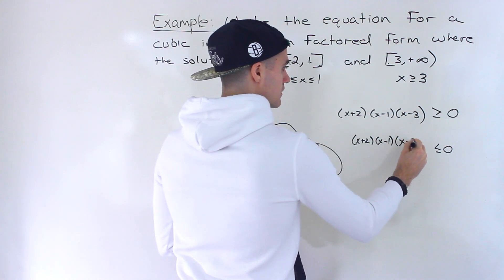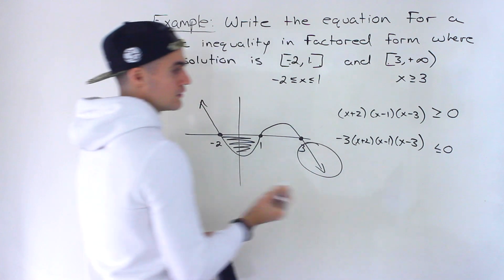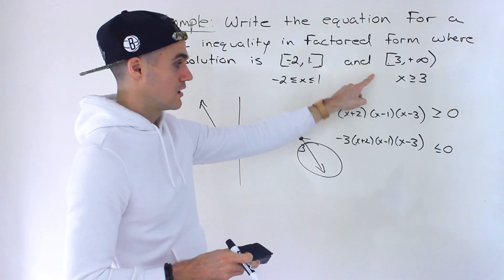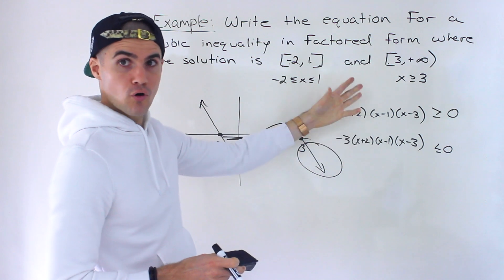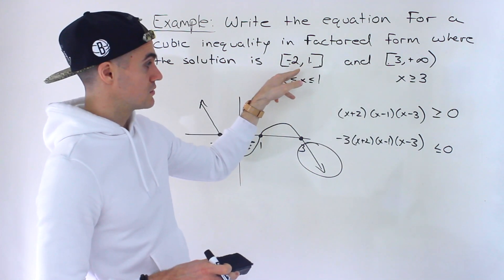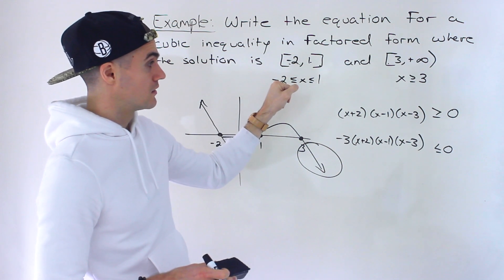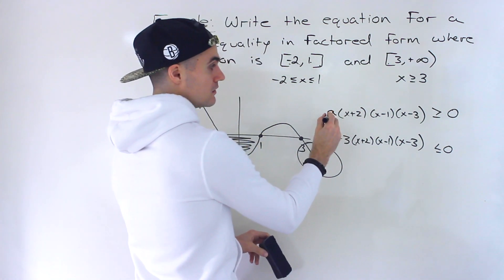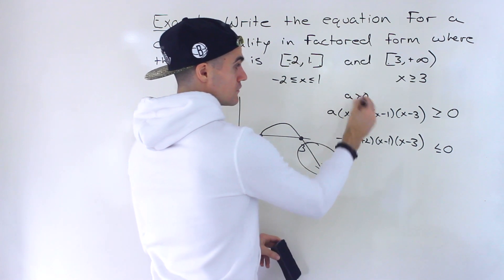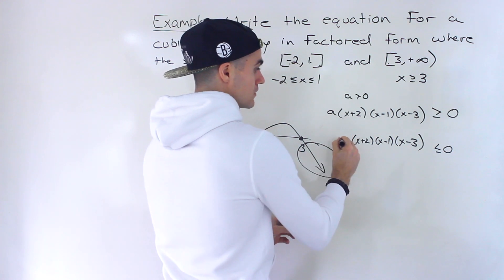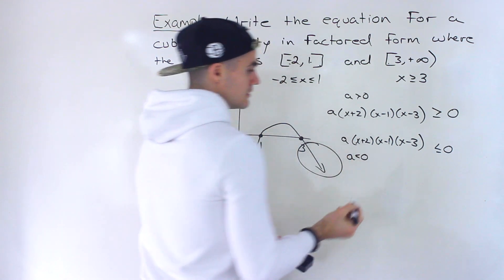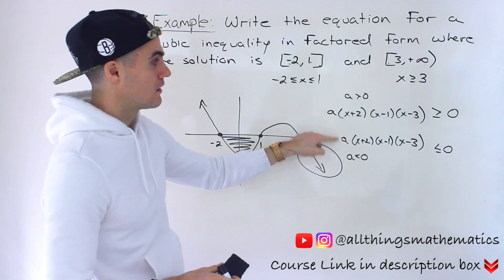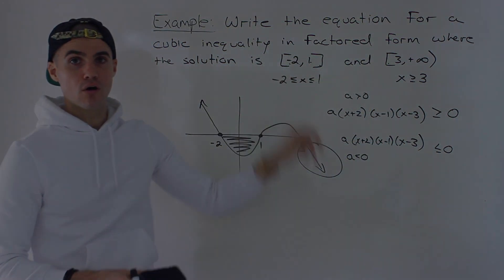For example, something like negative three. This polynomial inequality would also give the same solutions — you could plug any of these into a graphing calculator and get those solution intervals. To generalize: for the greater than or equal to zero version, 'a' can be any positive value; for the less than or equal to zero version, 'a' must be negative. As long as that holds, any such 'a' value will give you those solutions.